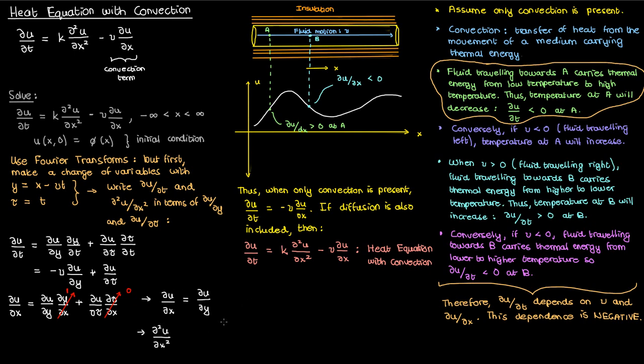So naturally if we find the second partial of u with respect to x in terms of the partials of u with respect to y and tau then by the chain rule we'll find that the second partial of u with respect to x is exactly equal to the second partial of u with respect to y.